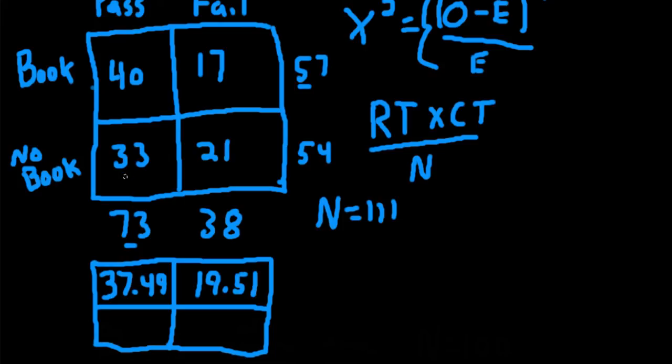And for no book passing the class, we'll take 73 times 54, and divide by 111. We'll get 35.51.